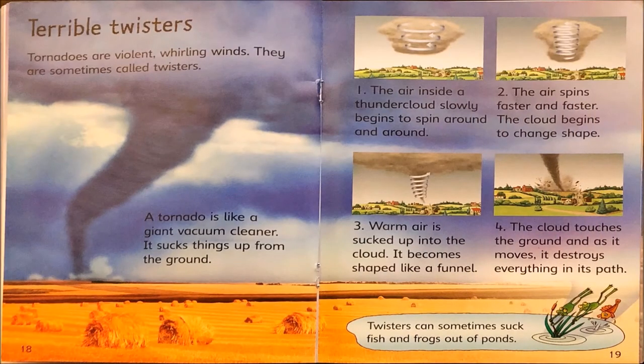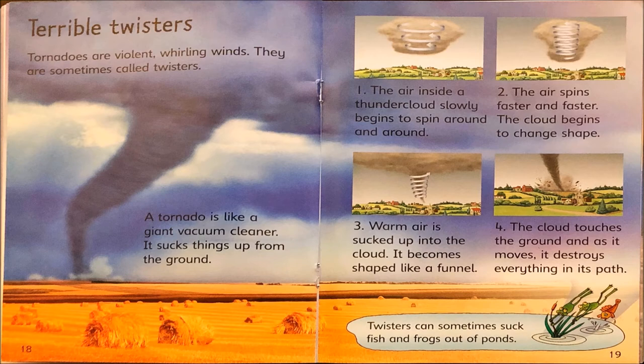Terrible twisters. Tornadoes are violent, whirling winds — they are sometimes called twisters. A tornado is like a giant vacuum cleaner — it sucks things up from the ground. First, the air inside a thundercloud slowly begins to spin around and around. Two, the air spins faster and faster and the cloud begins to change shape. Three, warm air is sucked up into the cloud, it becomes shaped like a funnel, the cloud touches the ground and as it moves it destroys everything in its path. Twisters can sometimes suck fish and frogs out of ponds.